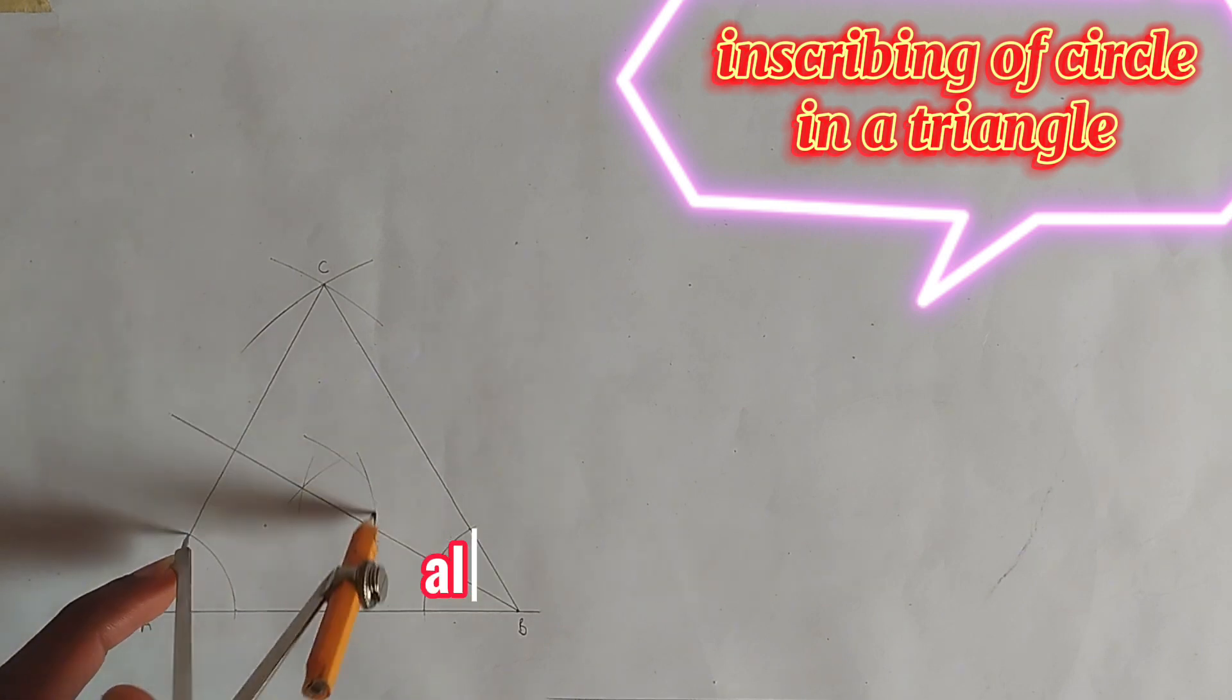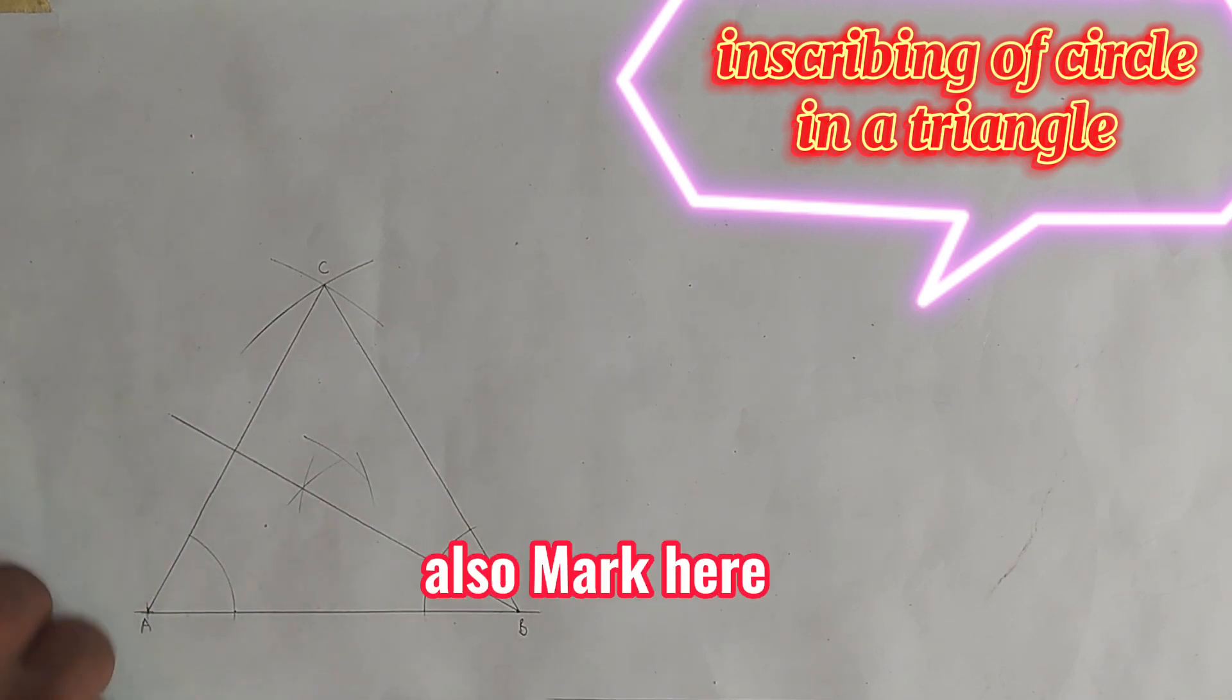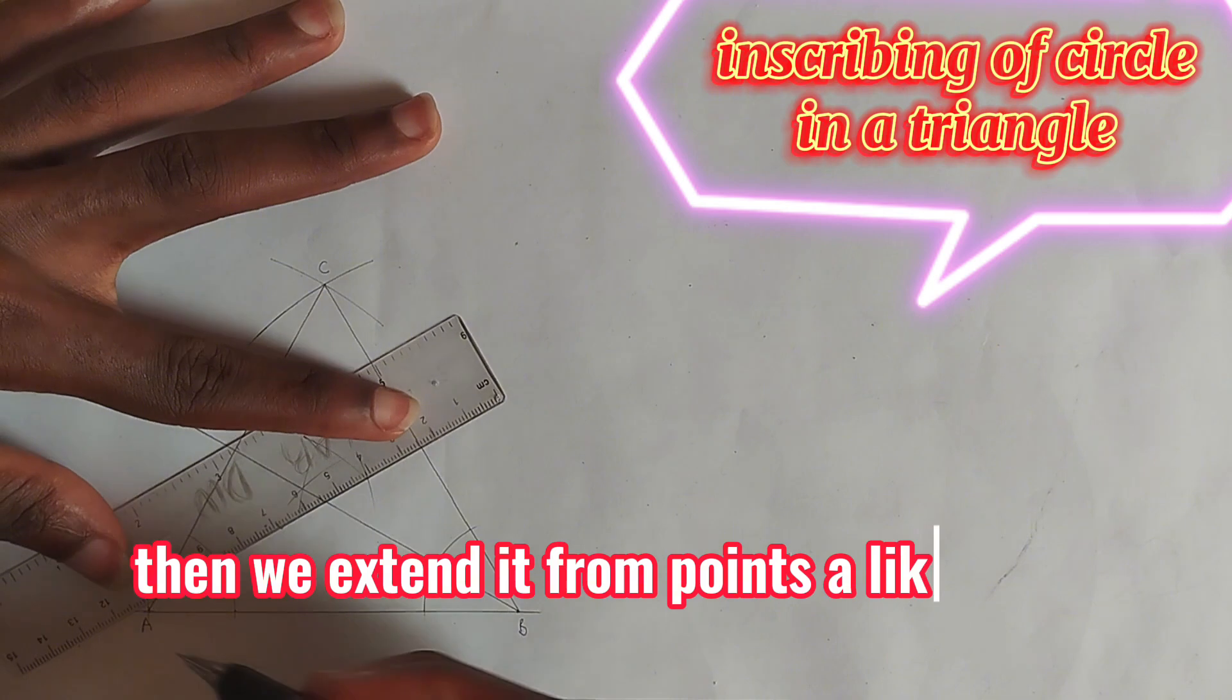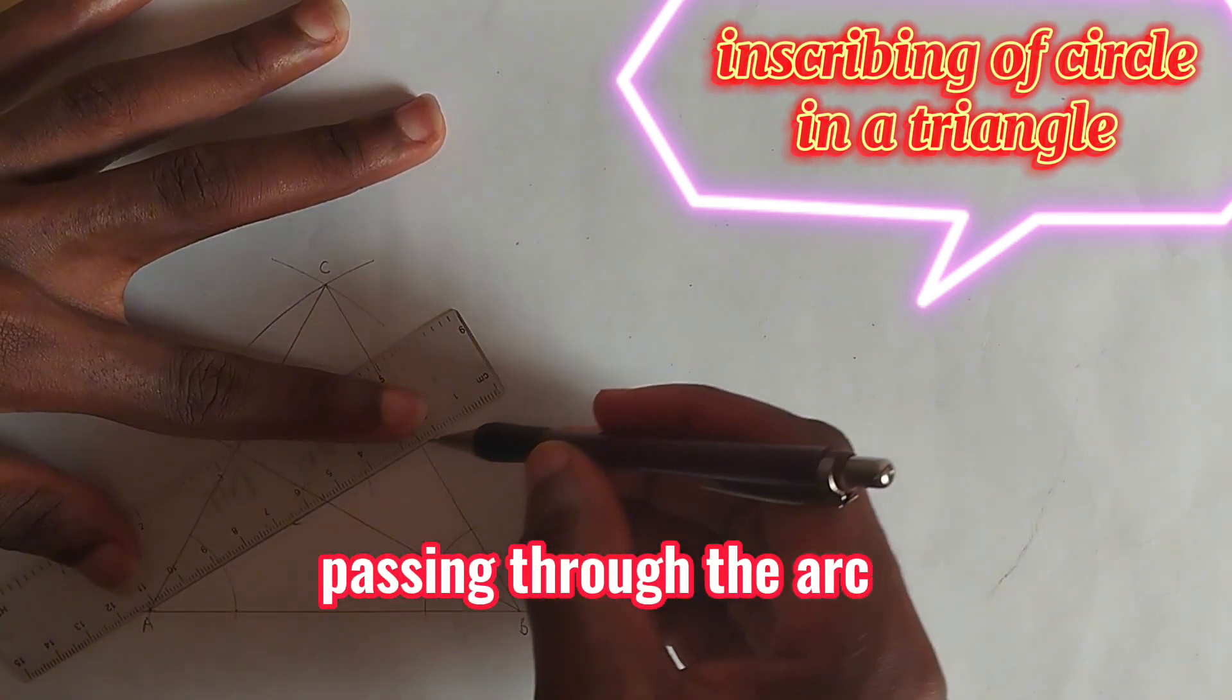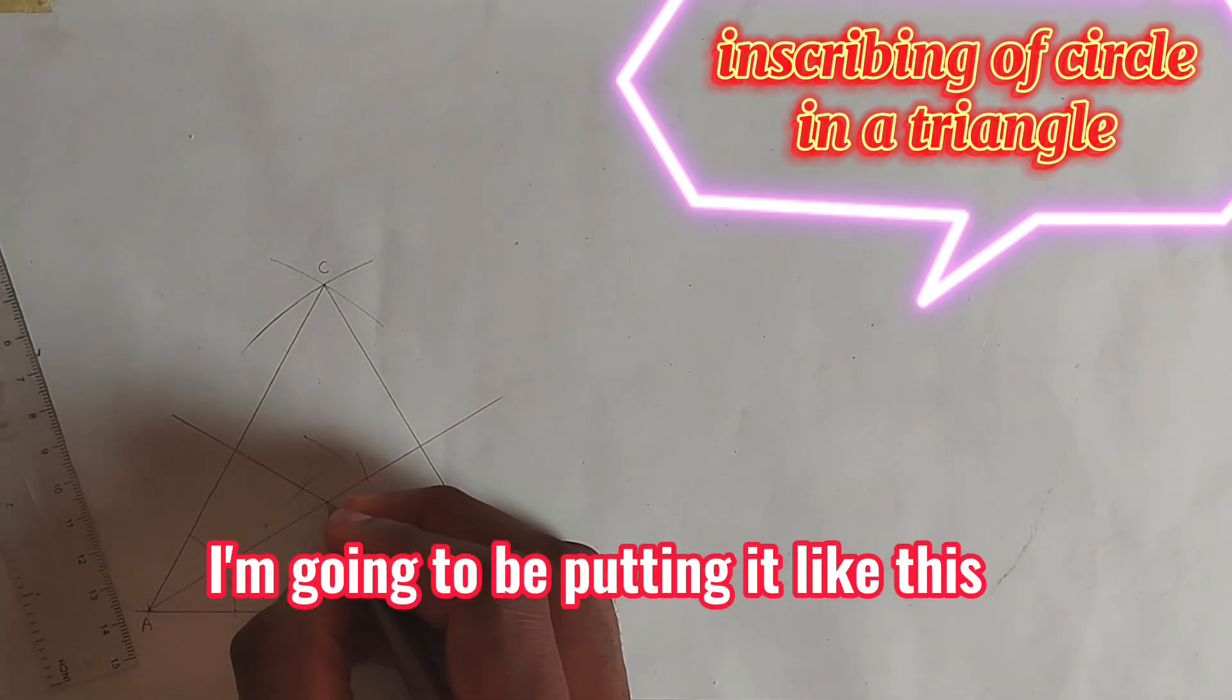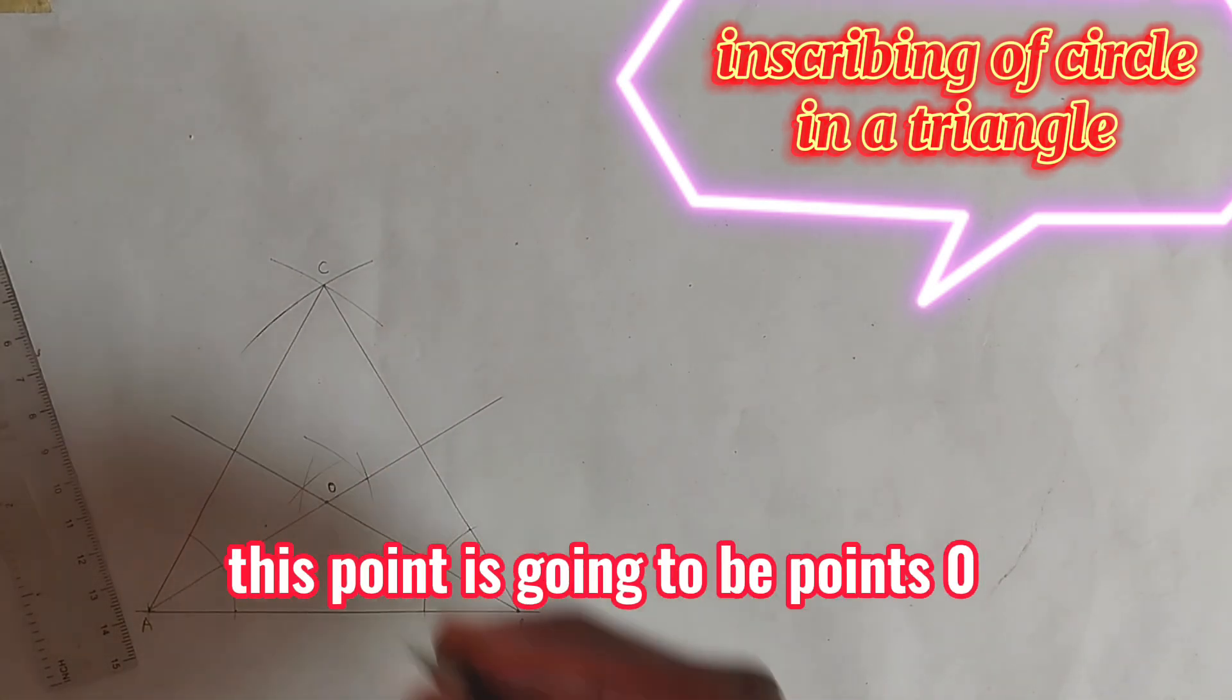We extend it from point A like this, passing through the arc we have marked. This point is going to be point O.